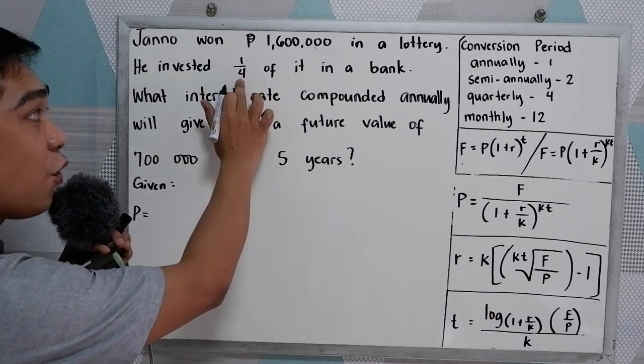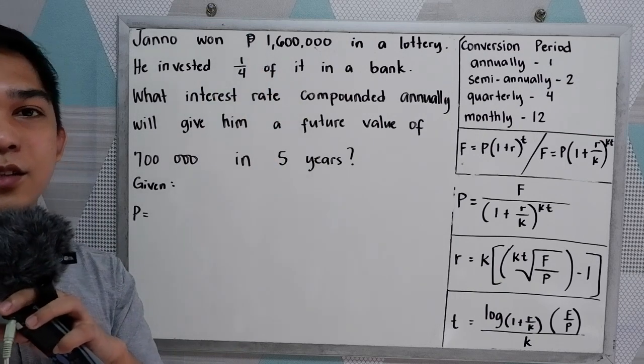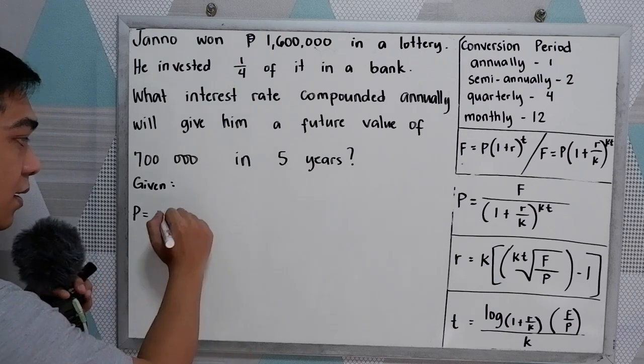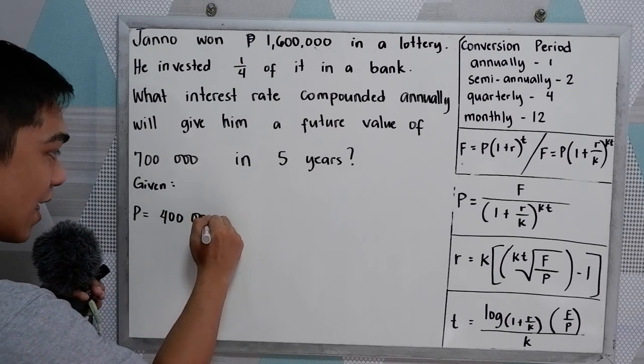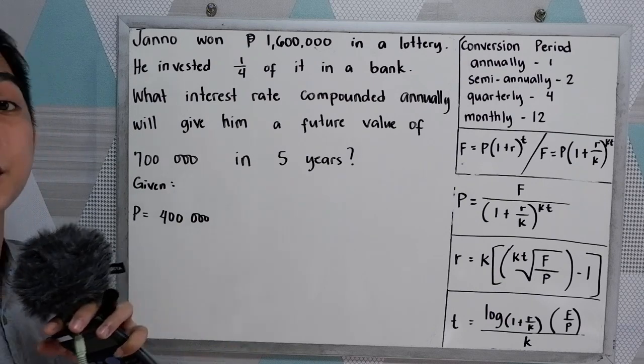He invested one-fourth of 1,600,000. So one-fourth of 1,600,000, that would be the principal, that is 400,000. So he invested 400,000 in his bank.